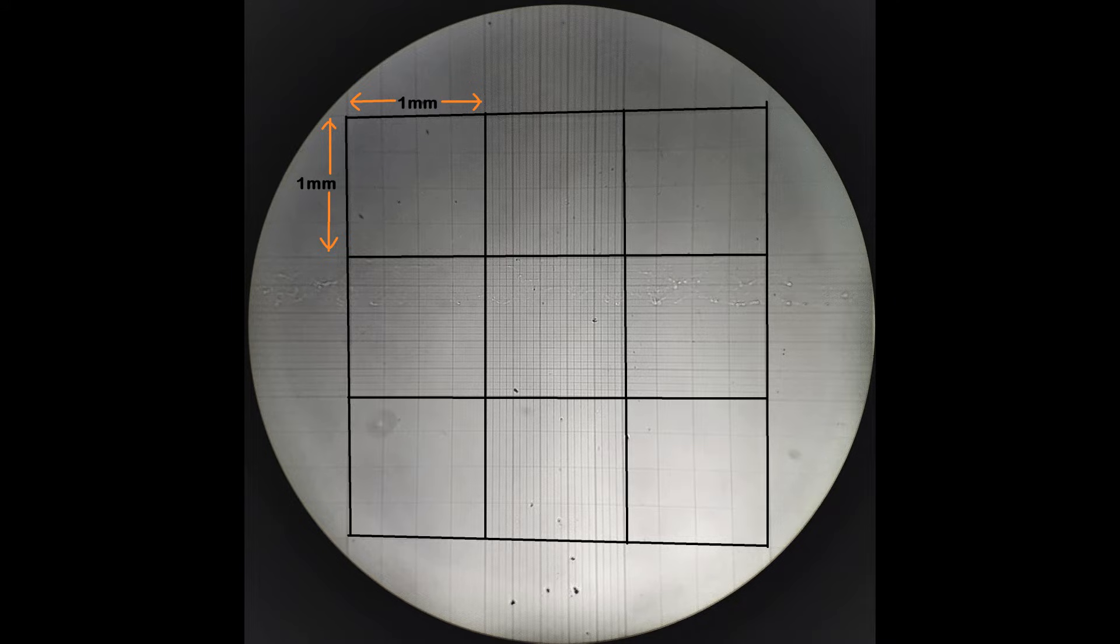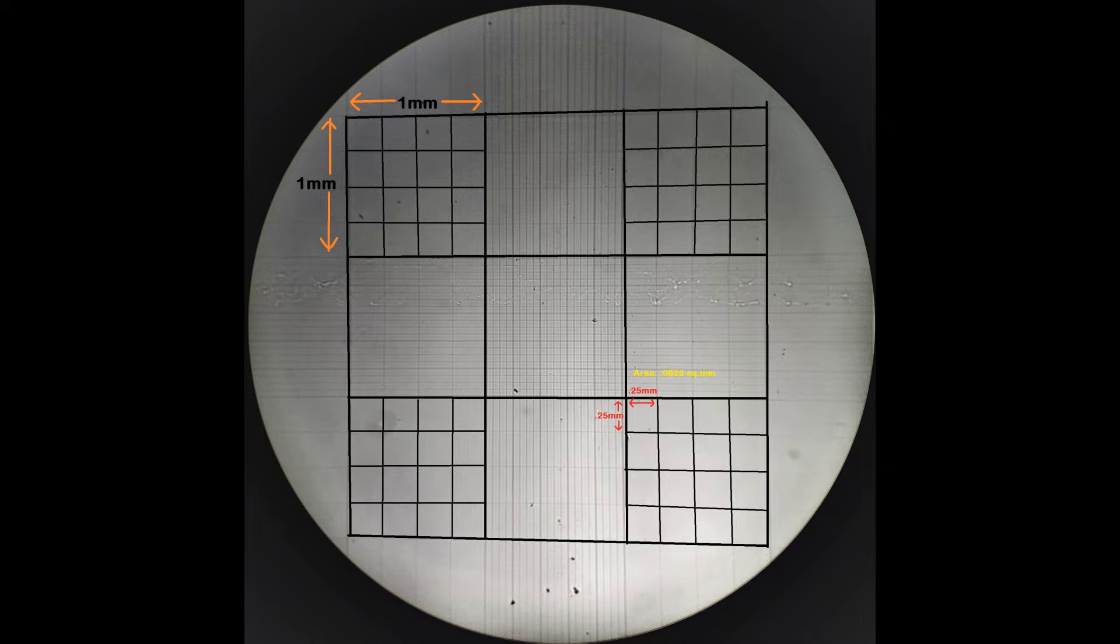Each of the four corner squares are further subdivided into 16 smaller squares, each measuring 0.25 by 0.25 mm and an area of 0.0625 mm².